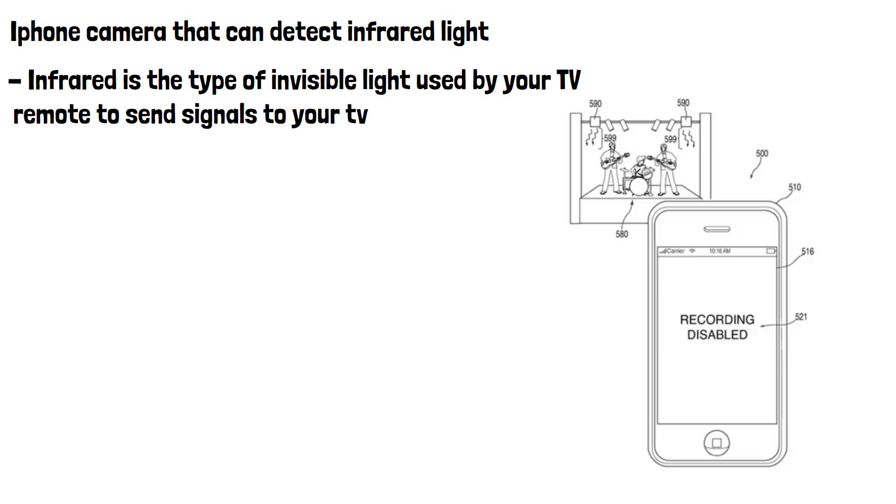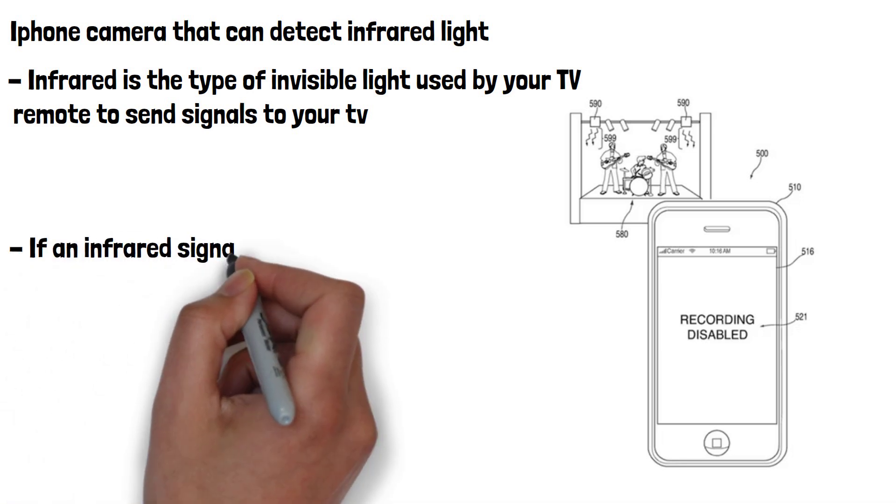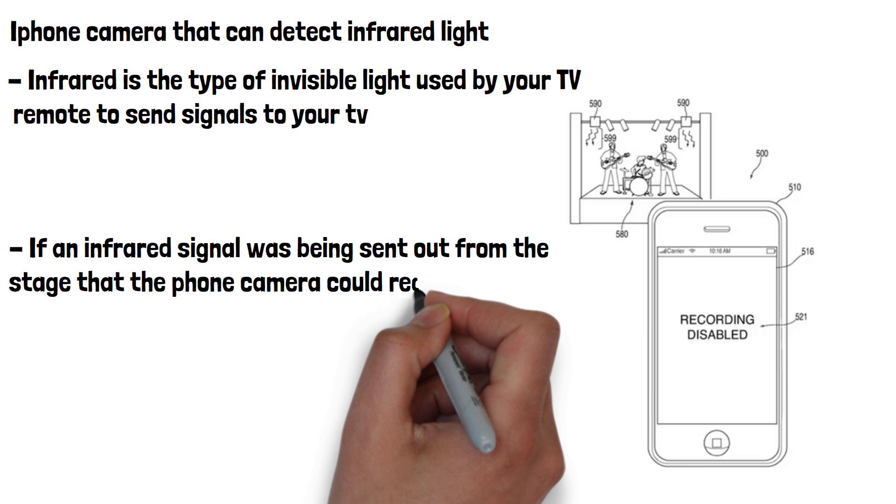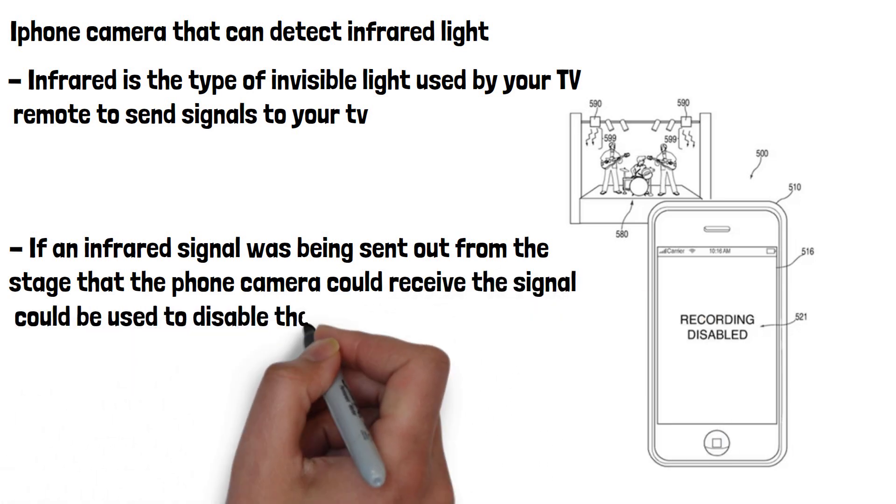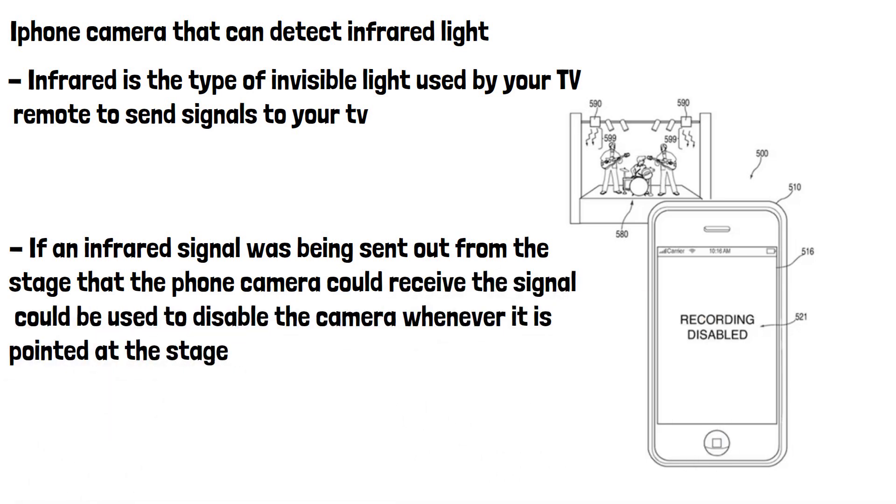Use cases of this are mentioned in the patent as potentially stopping people from recording live concerts and events. If an infrared signal was being sent out from the stage that the phone camera could receive, the signal could be used to disable the camera whenever it is pointed at the stage.